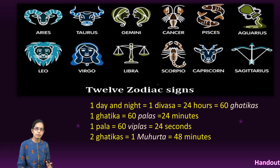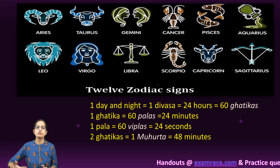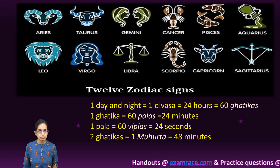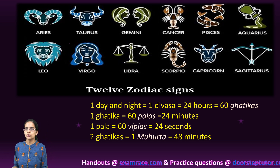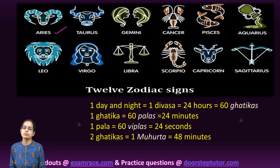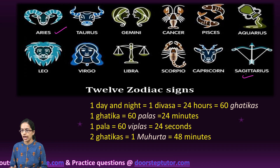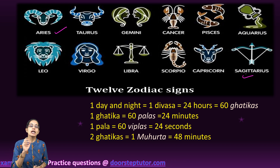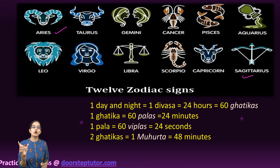Under the solar month system, the 12 constellations or 12 rashis form the 12 months. These correspond to the 12 zodiac signs, ranging from Aries to Sagittarius — here referred to by their Hindi names.